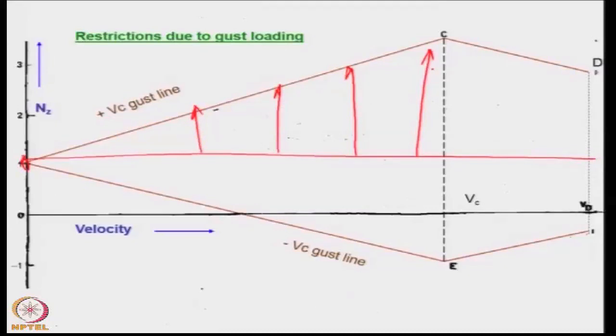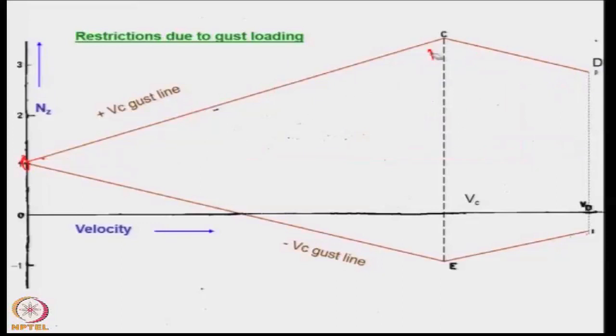We also remember that at speeds beyond vc, the numerical value of the gust velocity is lower. So therefore, you can see that the load factors introduced also are lower. Basically, what it means is that if the aircraft is in level flight at any point along this line at various speeds in level flight, then the lines indicate what kind of additional load factor will be created.